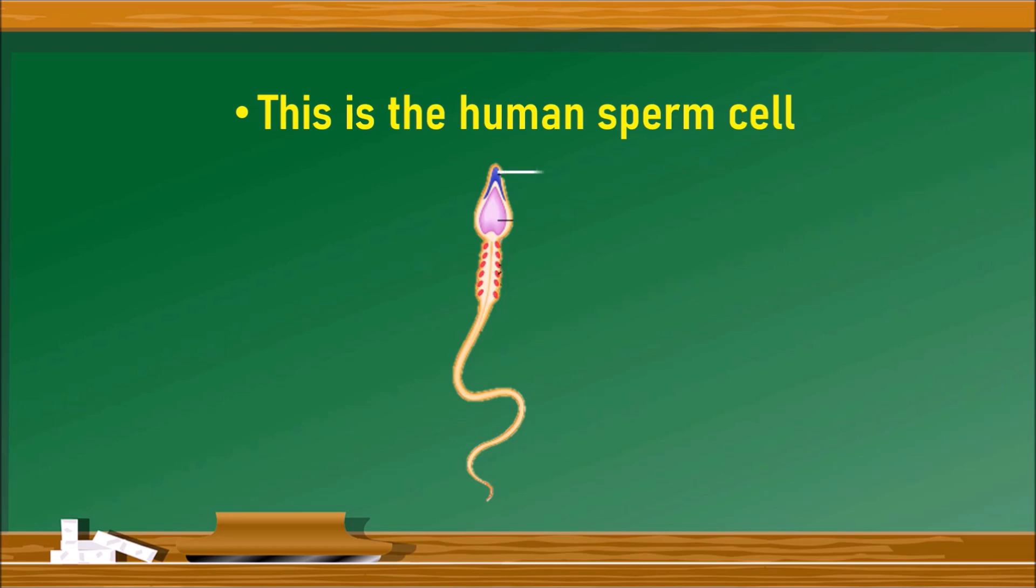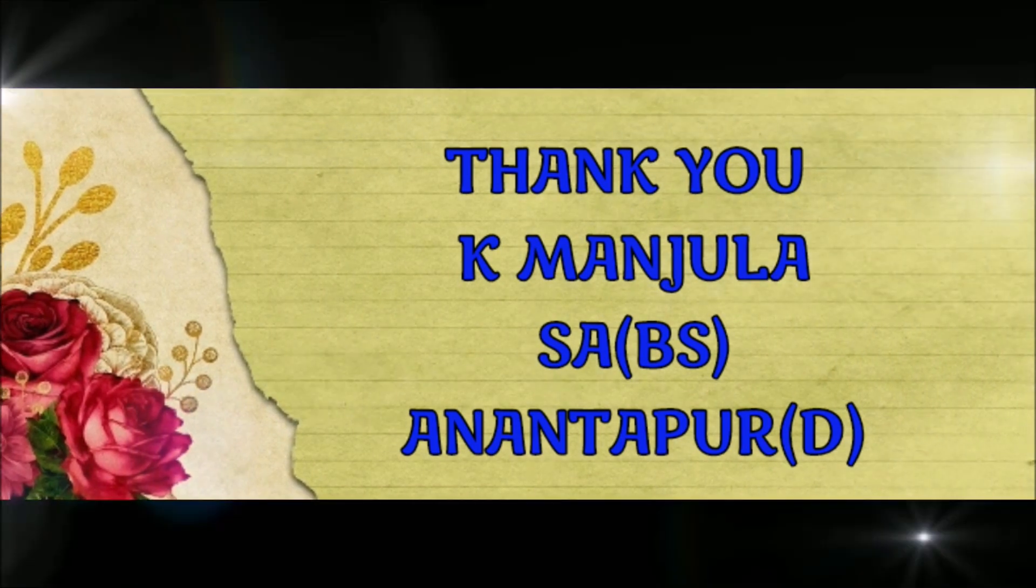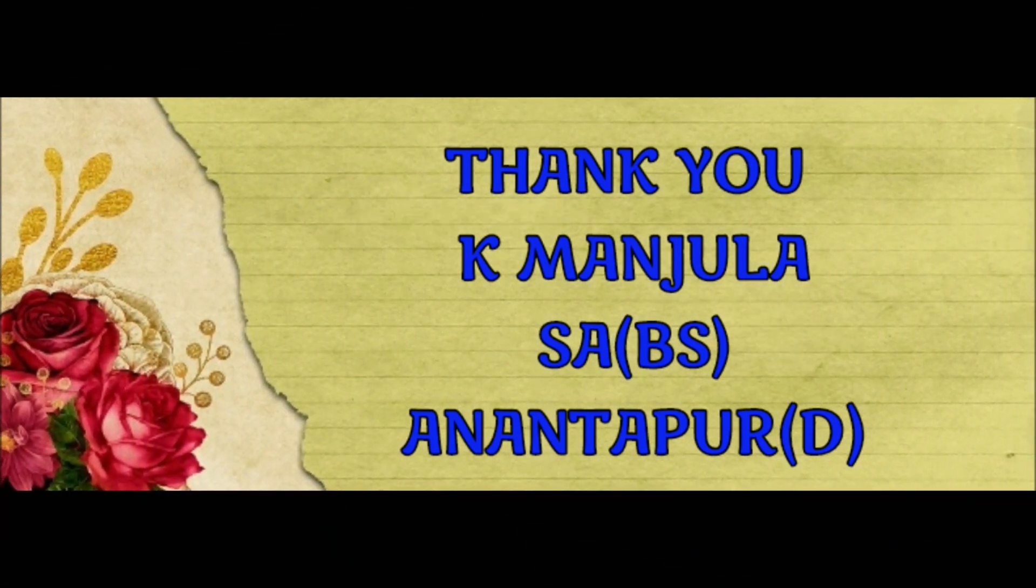The different parts of sperm cells are acrosome. The upper cap-like structure is called acrosome. And this is the head portion which contains a nucleus, big nucleus. And there is a neck which has a middle piece containing a lot of mitochondria. And finally, the tail which helps for the motility of sperm cells.